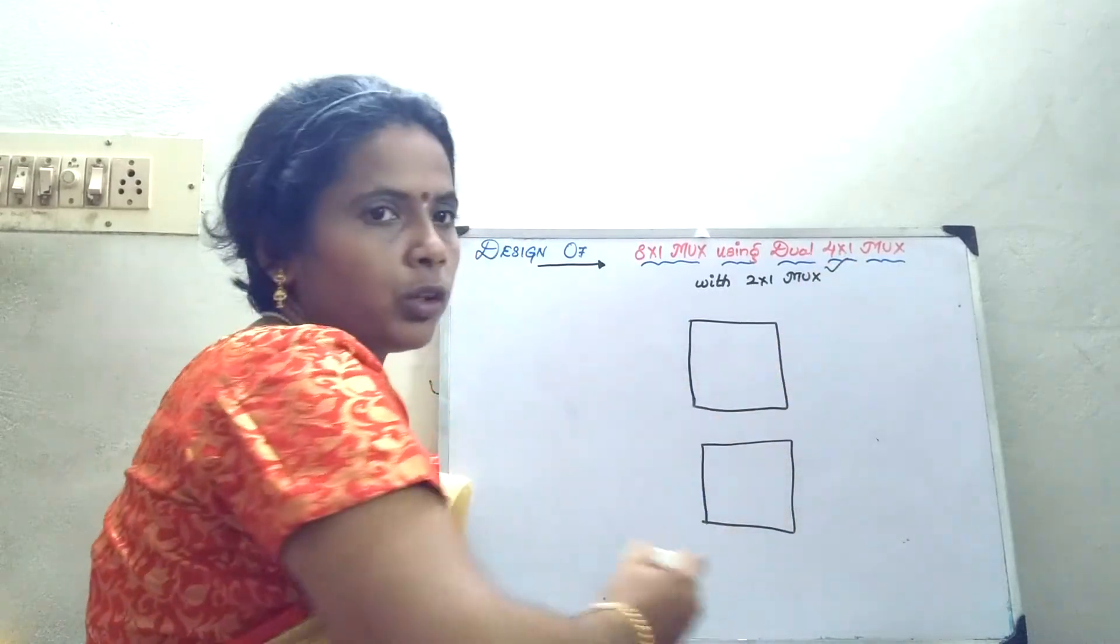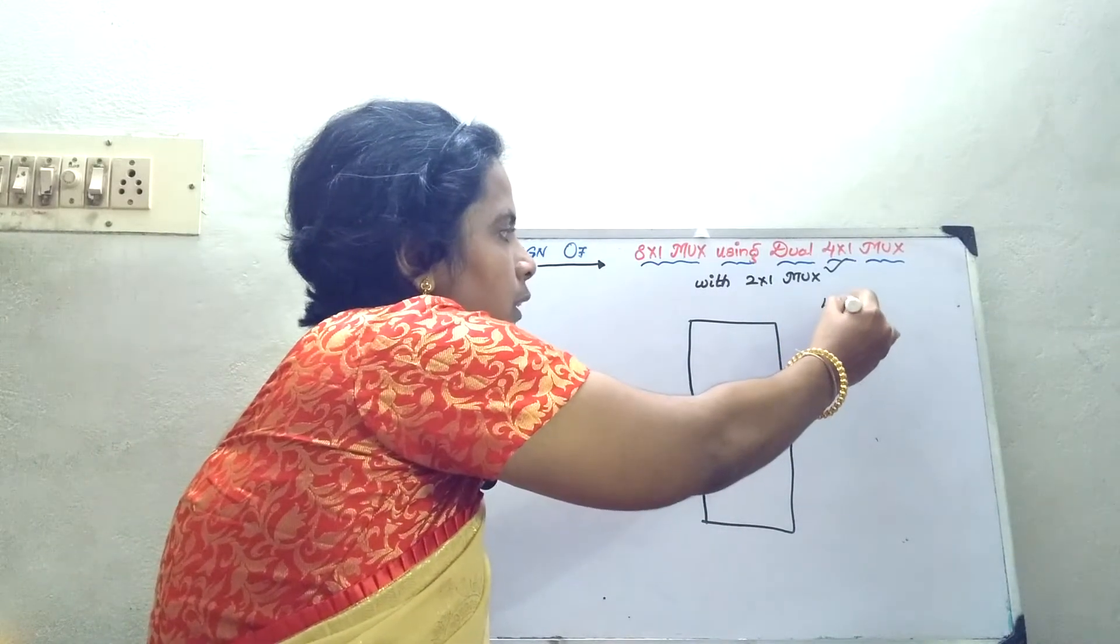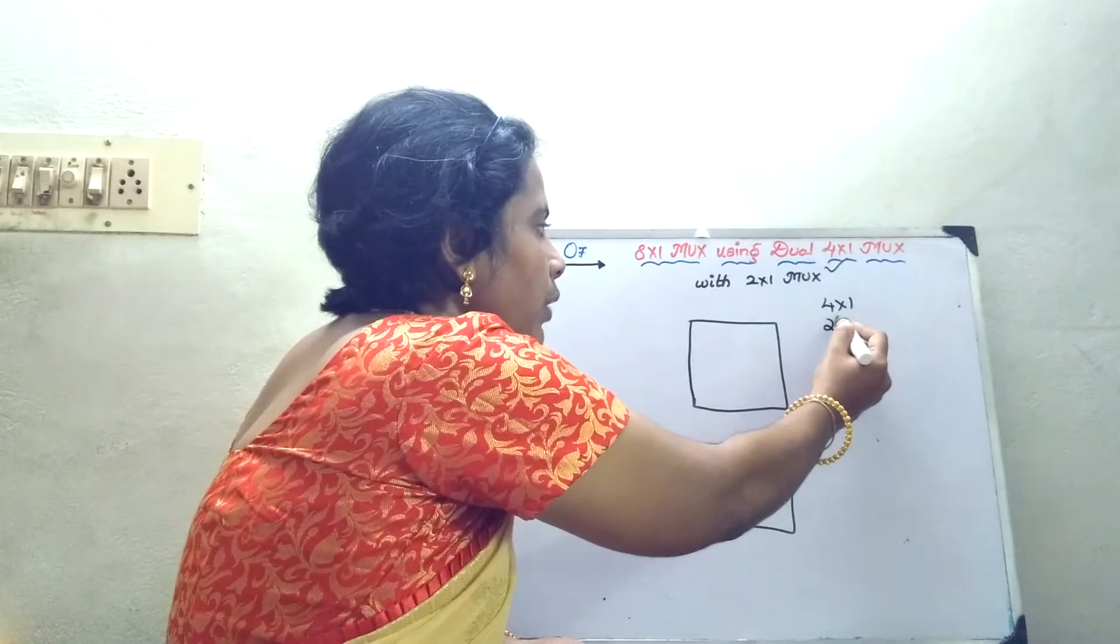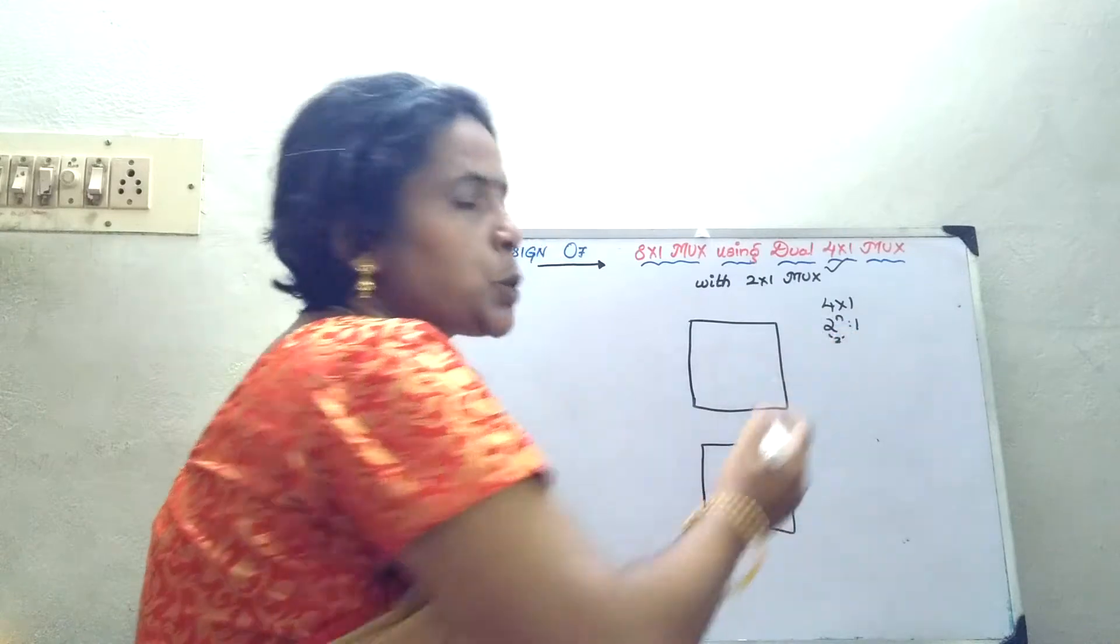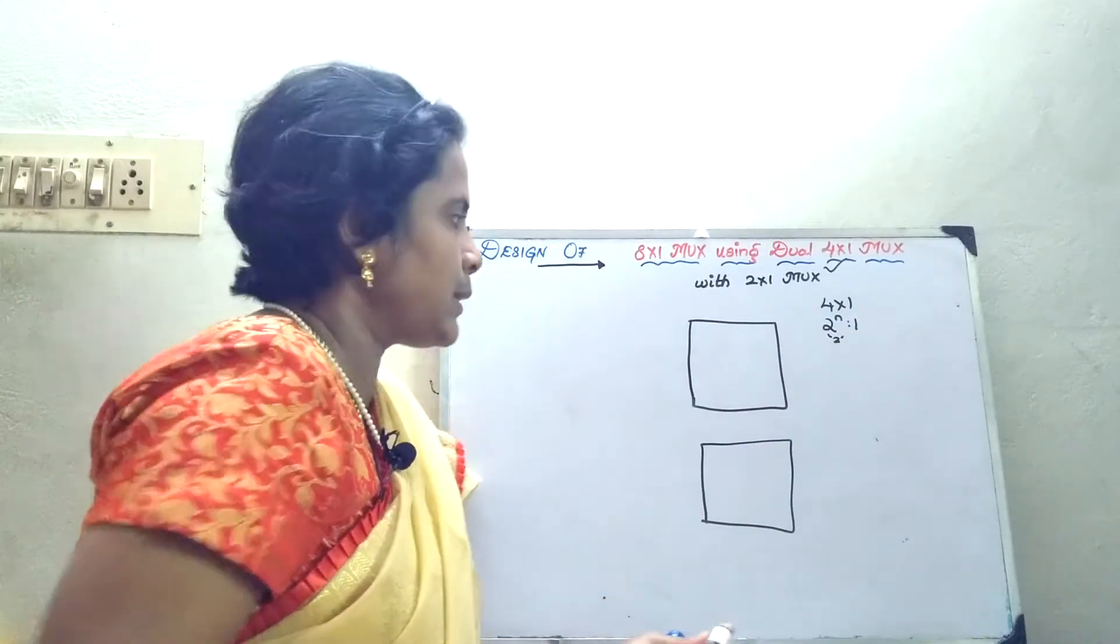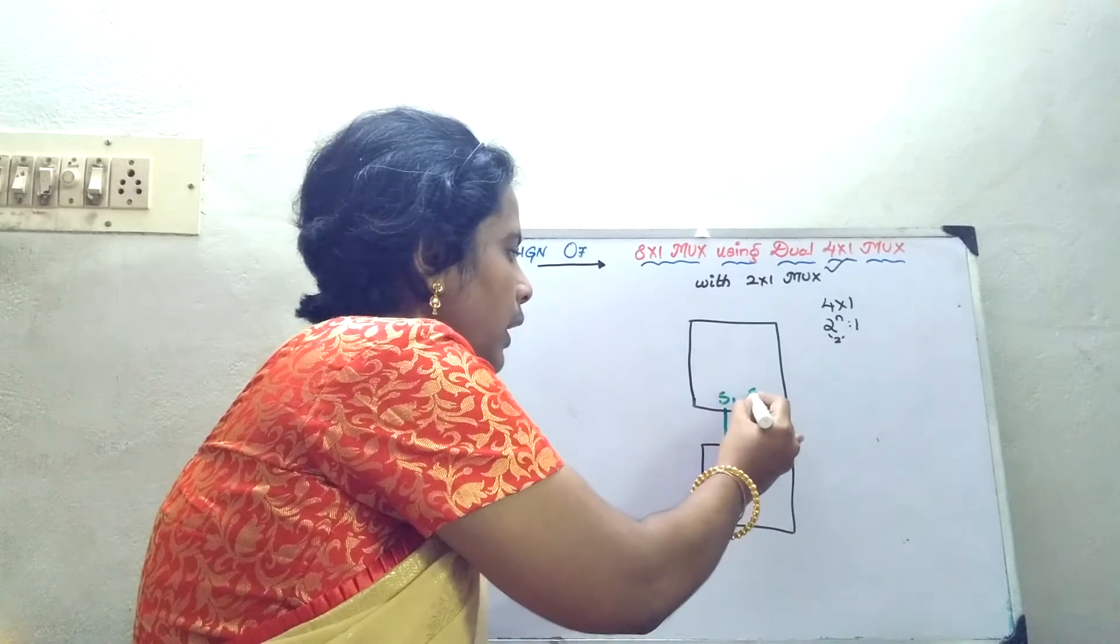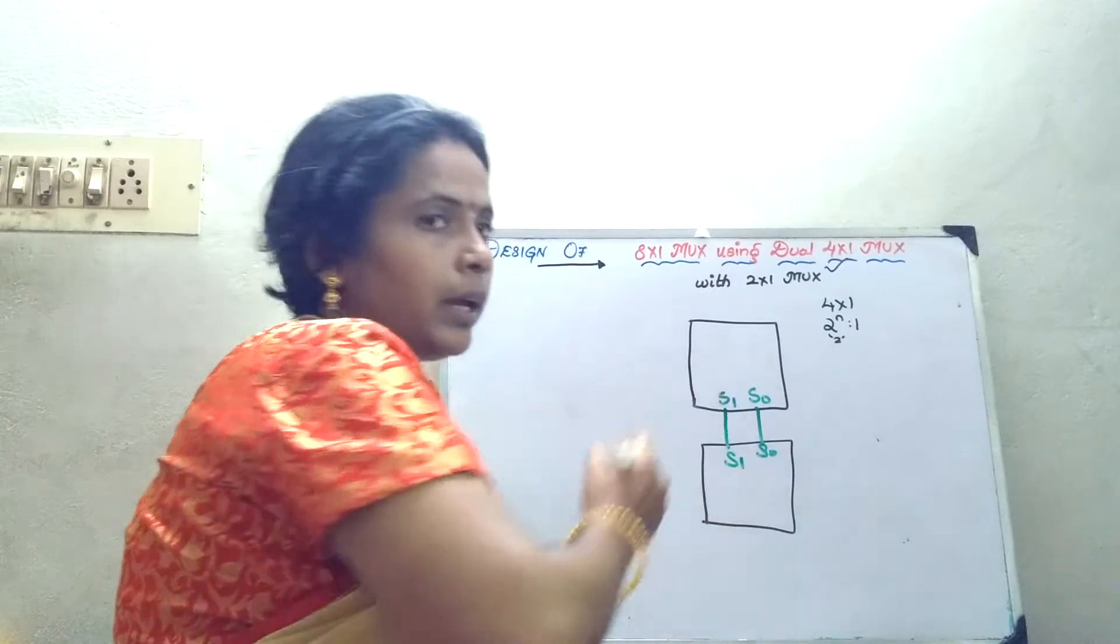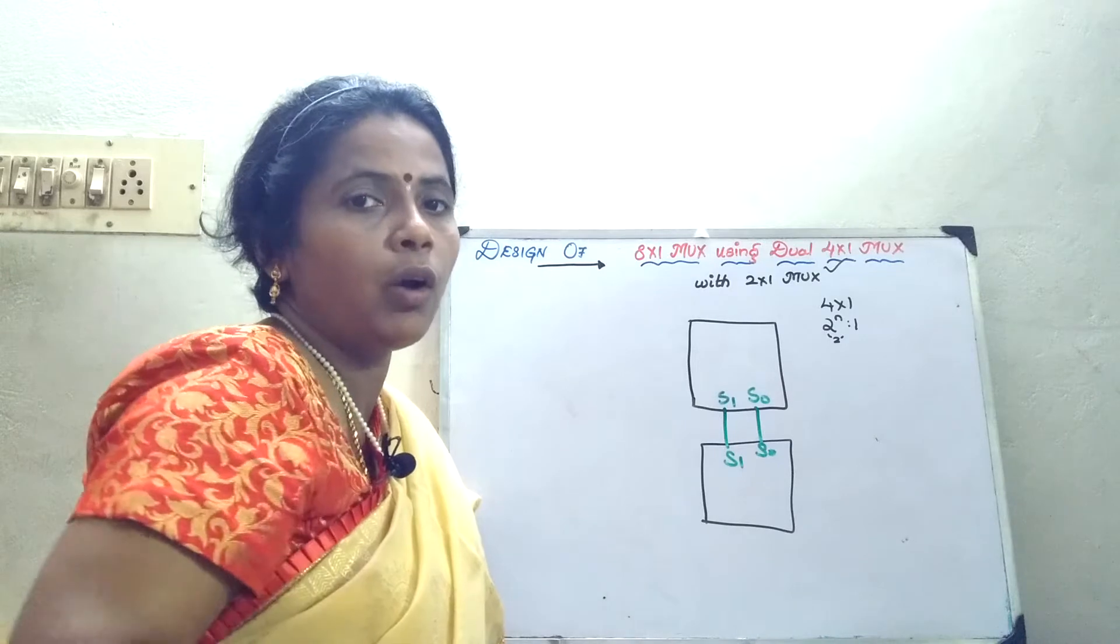First I have taken the dual 4 cross 1 mux. When I say it as a 4 cross 1 mux, how many select lines I should have? It is 2 power n is to 1. So it is 2 select lines I should have. Now let us draw these select lines. I am drawing the select lines for both the mux, S naught and S1. Now select lines is over. So now you should concentrate on how to draw your inputs.